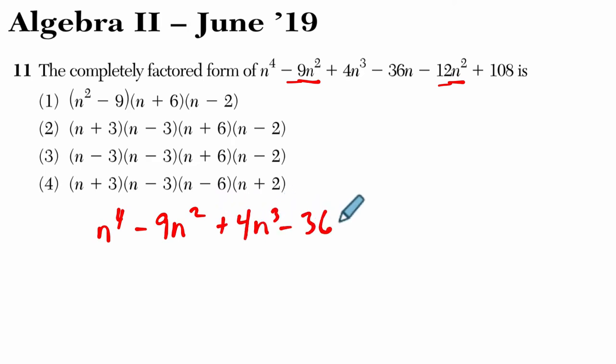So if you look at this, I'm just going to rewrite it, minus 12n-squared plus 108. And then you look at it, you might notice that you have potentially three binomials that could be factored by grouping.